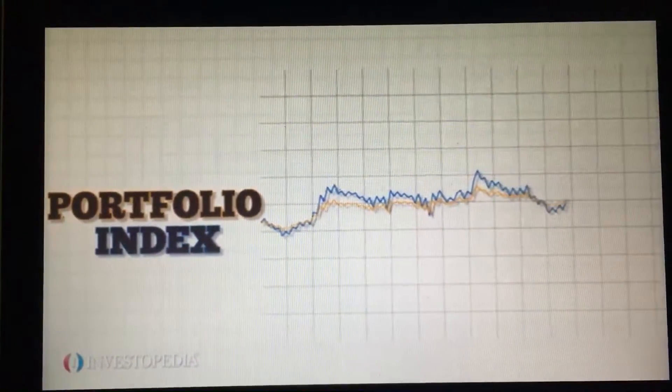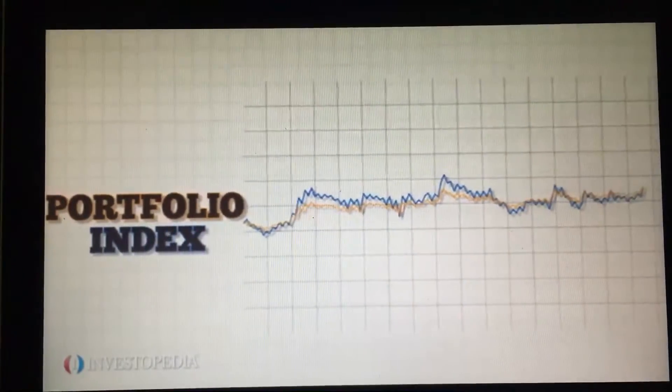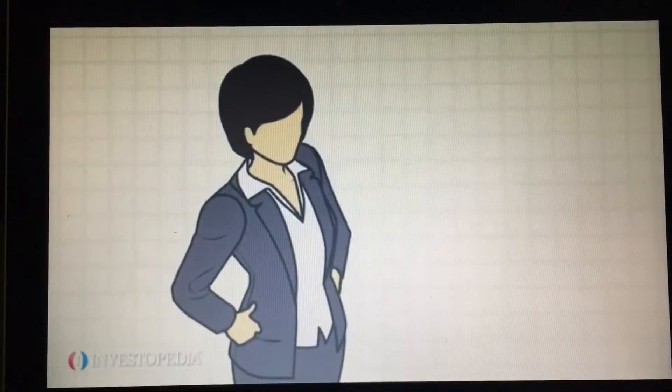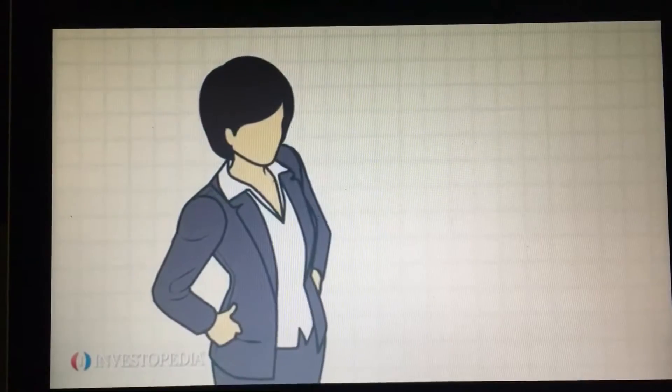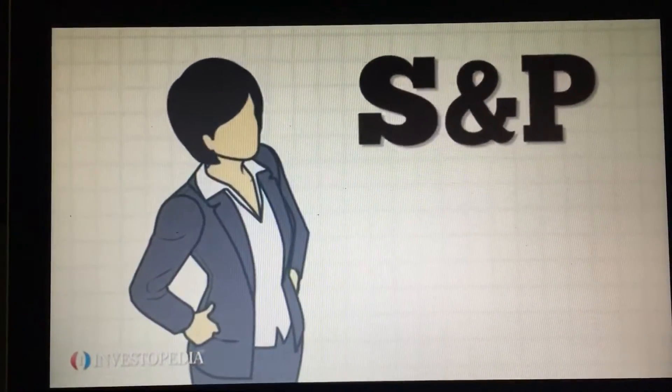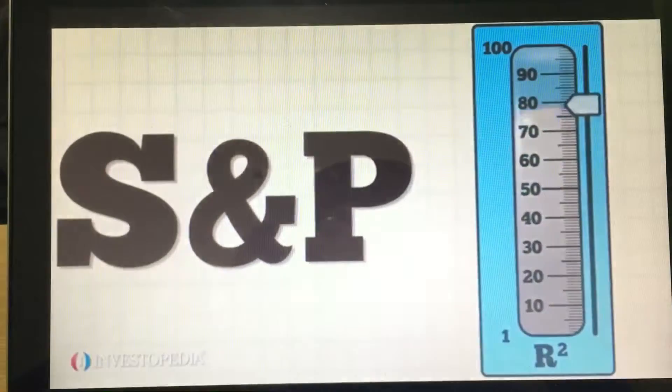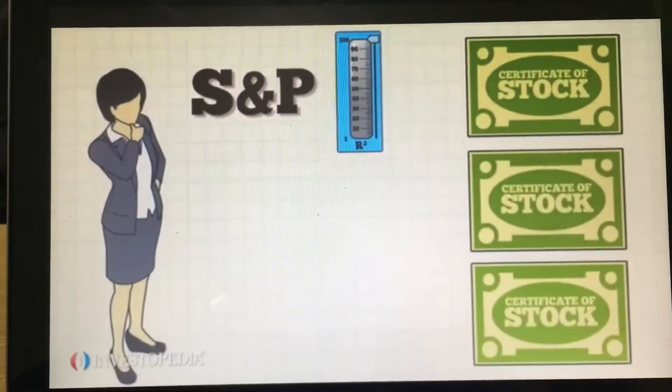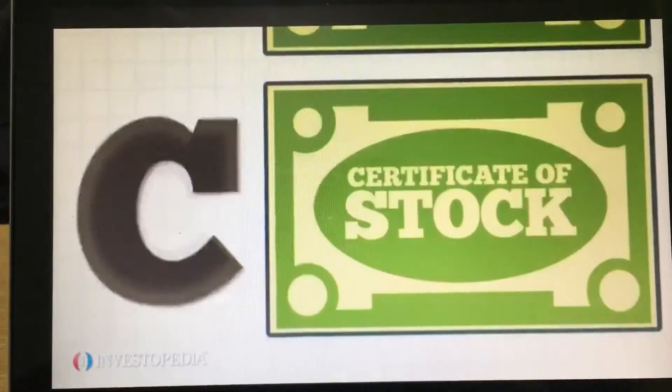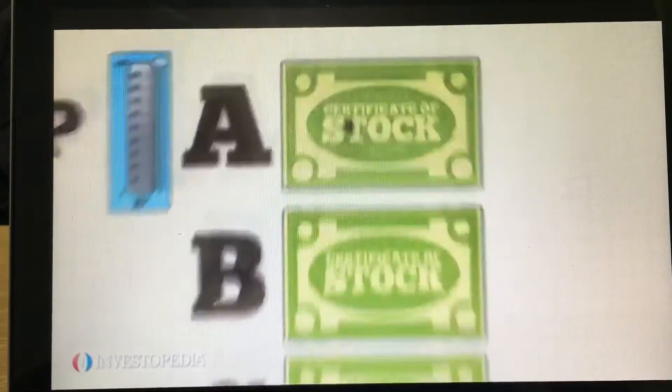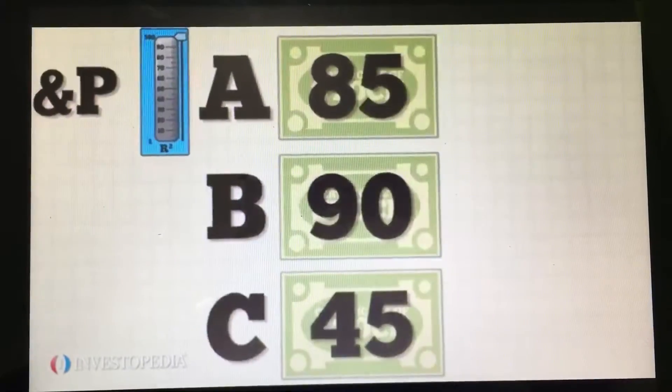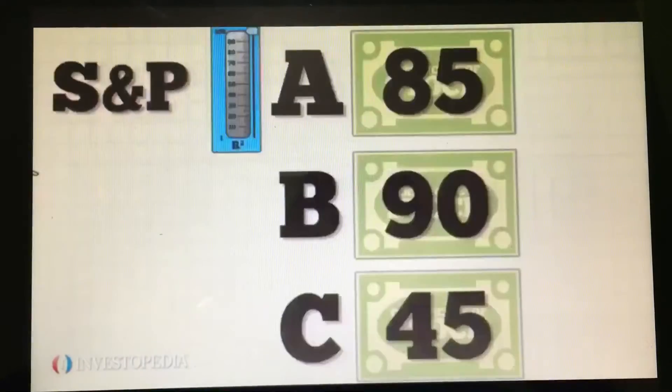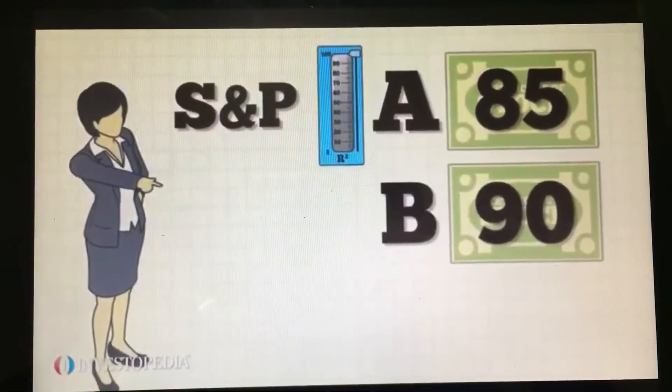For example, if Janet seeks a portfolio whose performance is strongly correlated to the S&P, she would look for a portfolio with a high R-squared value to the S&P. If there were three potential stocks, A, B, and C, with R-squared values of 85, 90, and 45, respectively, then Janet would choose only A and B to include in her portfolio.